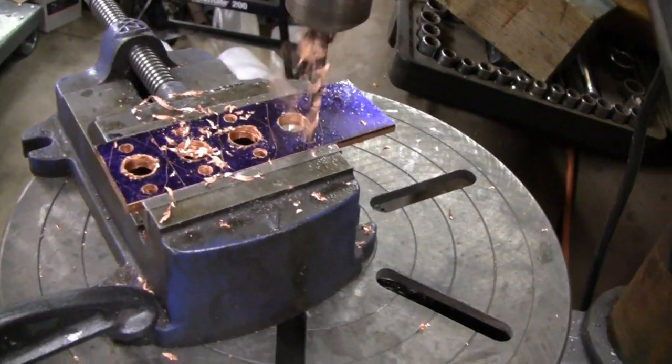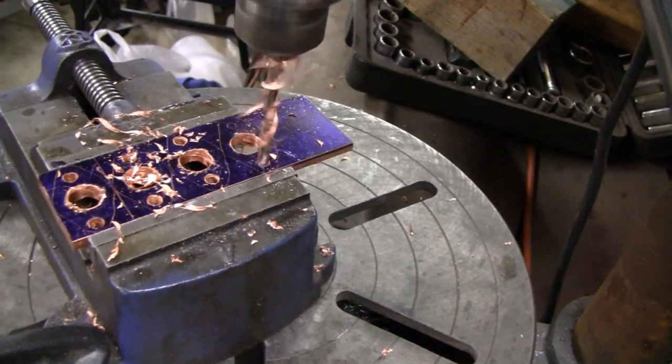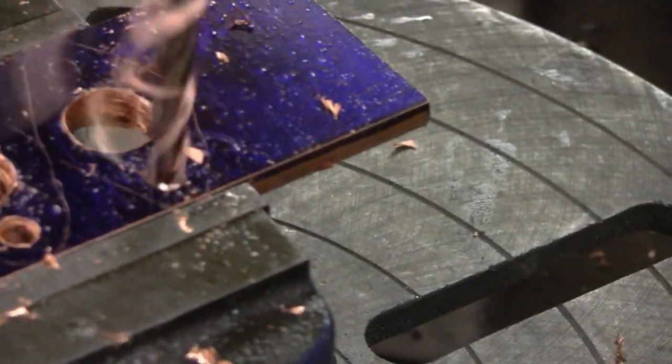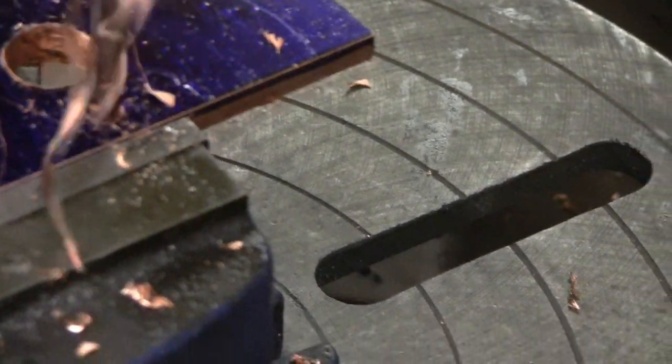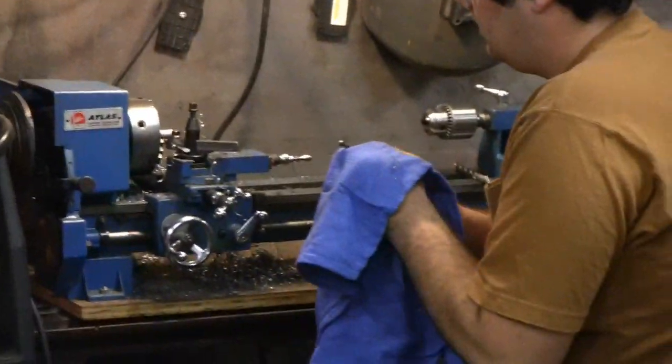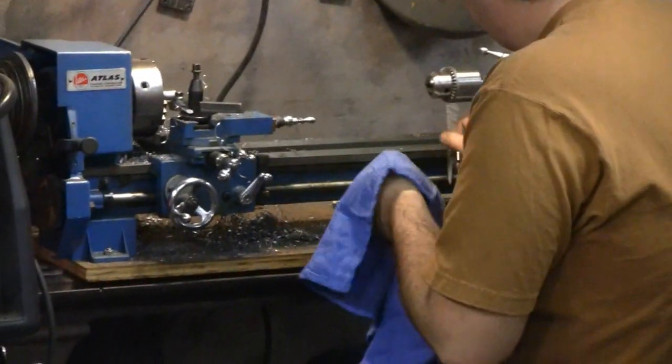We're almost done here. Just got to put some of these end holes in. This copper is doing pretty good. Mike's still working on his bushings or whatever. She's about done. Let me finish up here and then I'll cut them in half.